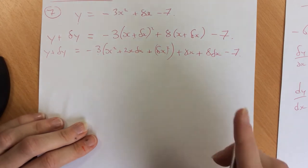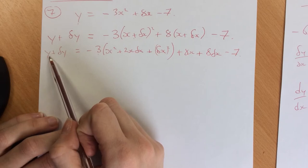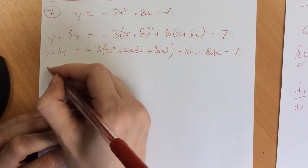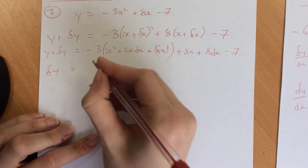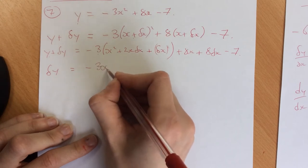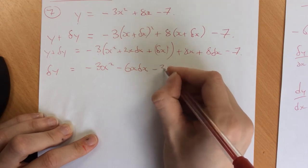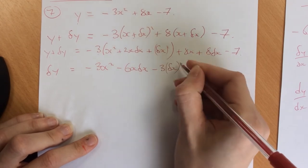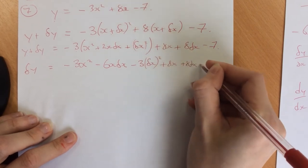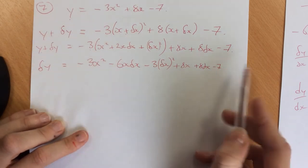Now we don't want this y over here, so we're going to move the y over by subtracting what our y was from this side. So we end up with δy, and at the same time I'm going to expand this bracket: -3x² - 6x·δx - 3δx² + 8x + 8δx - 7. I've taken away from here, so I'm going to take it away from this side.